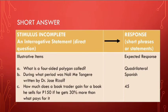For the short answer type, similar to the completion type, this can assess learners' both declarative and procedural knowledge, requiring thinking processes such as remembering, comprehending, and applying. Using the same examples as before, the stimulus is now an interrogative statement in which they have to provide an answer. For this short answer type, aside from basic recall, it could also test comprehension and application.